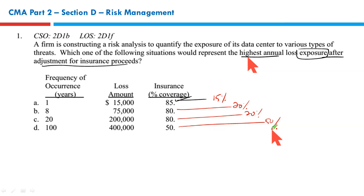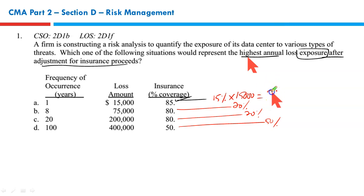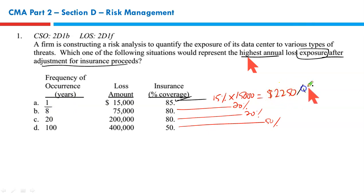How do we calculate this? Let's read the table. Event A has a probability of occurrence once in a year. The loss amount could be $15,000, out of which 85% is covered. What is not covered is 15% of this amount — 15% of $15,000 is $2,250. Occurrence is once a year, so the loss is $2,250 per year.